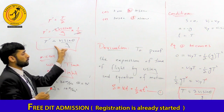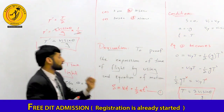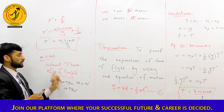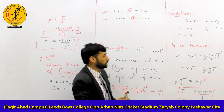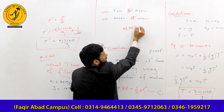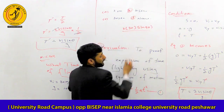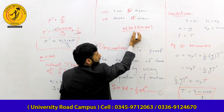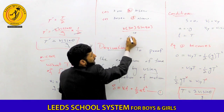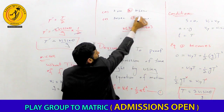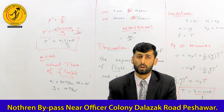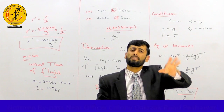Using the equation T = 2·vi·sinθ / g, we substitute: T = 2 × 30 × sin90° / 10. Since sin90° = 1, this gives T = 60 / 10 = 6 seconds. So the correct answer is 6 seconds. This concludes our discussion of projectile motion parameters.